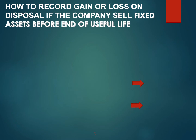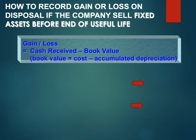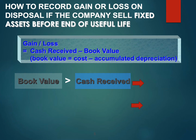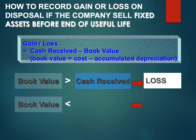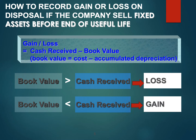How to record gain or loss on disposal if the company sells a fixed asset before the end of its useful life? Gain or loss is calculated as cash received minus book value, where book value equals cost minus accumulated depreciation. If the book value is more than cash received, the company will get a loss. If the book value is less than cash received, the company will get a gain on disposal.